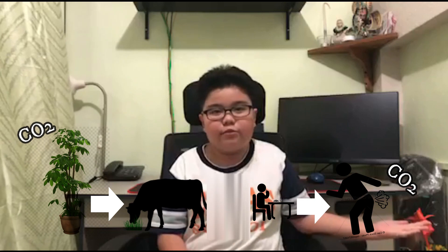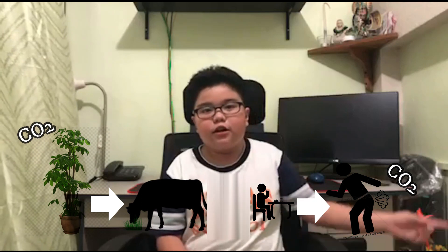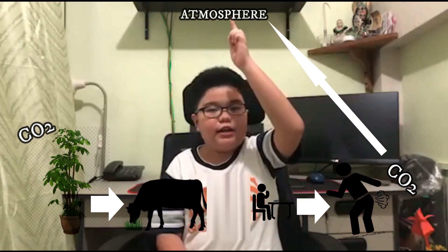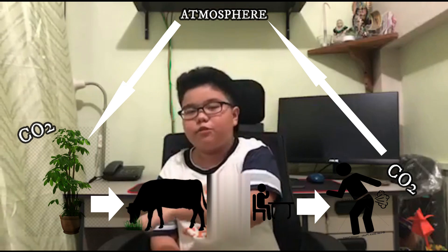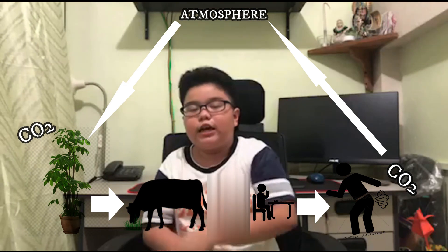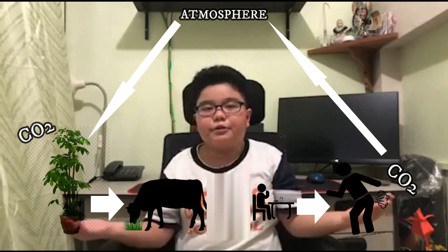The last step is where the CO2 or carbon dioxide goes back to the atmosphere and the plants absorb the carbon dioxide and the cycle repeats again. Now let us move on to the oxygen cycle. The first step is where plants intake or absorb CO2, sunlight, water, and nutrients from the soil.